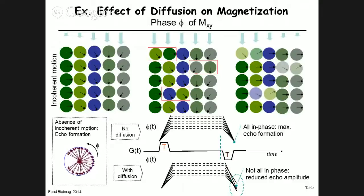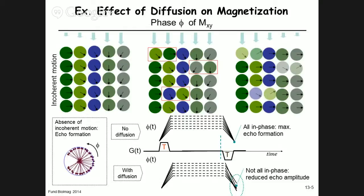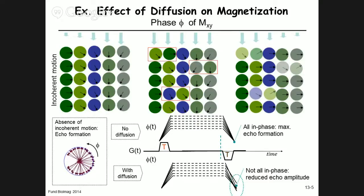To summarize: diffusion creates a mismatch in the phase of the magnetization because spins are at different positions and are not properly refocused under the refocusing gradient. At echo time the magnetization phases are not collinear, creating a reduction in echo amplitude. That is how one can measure the effect of diffusion on the magnetic resonance signal.